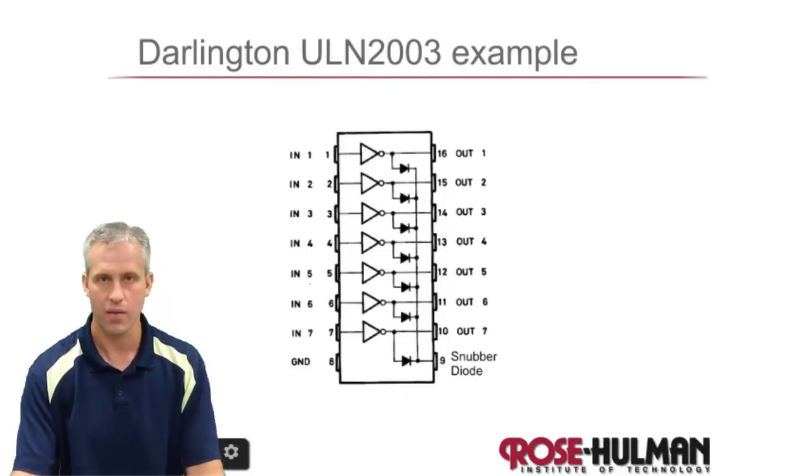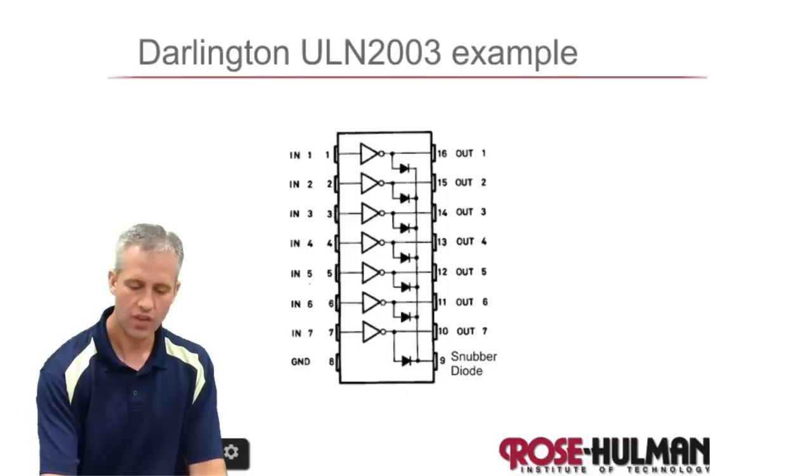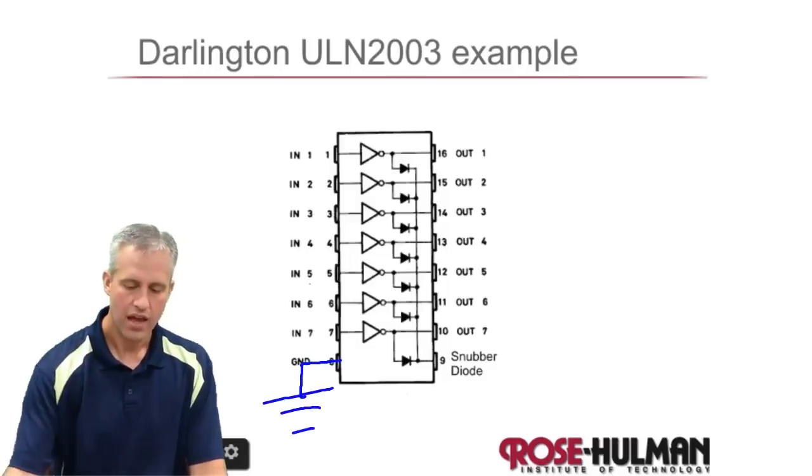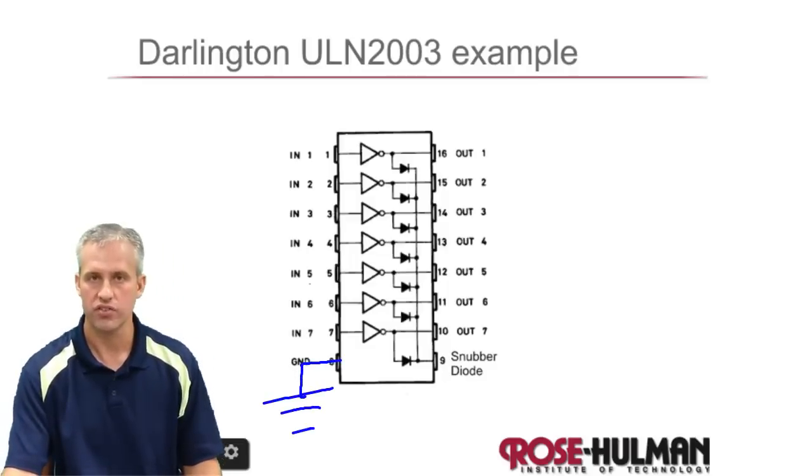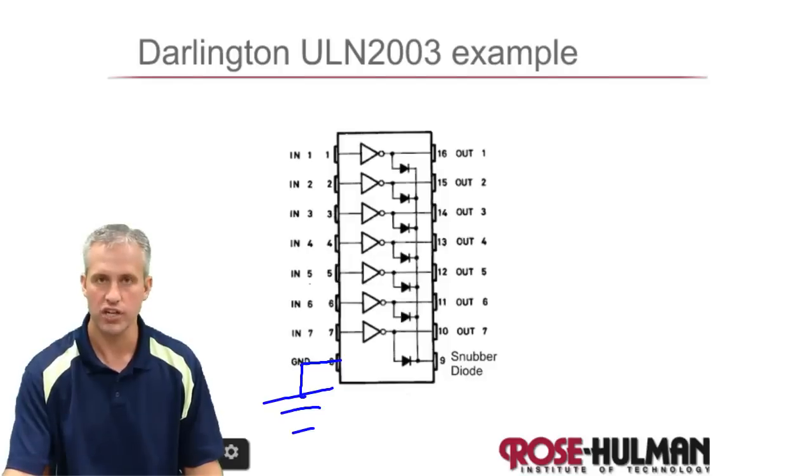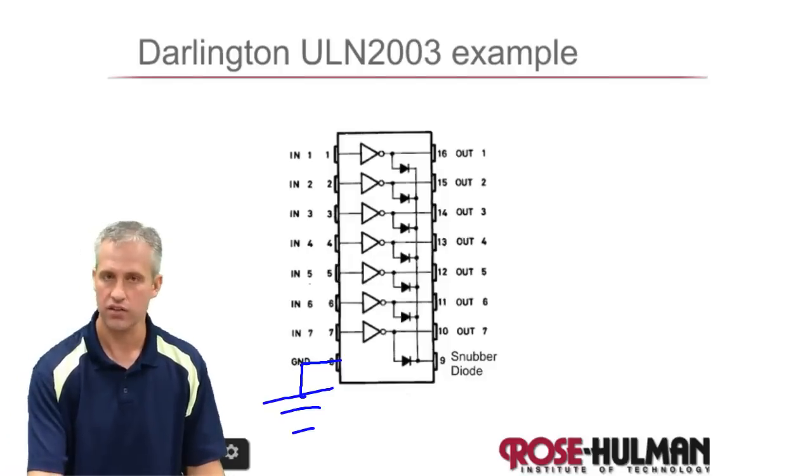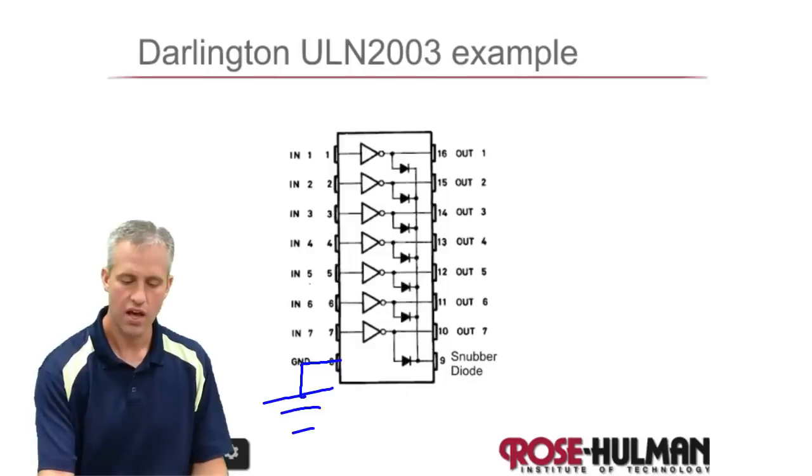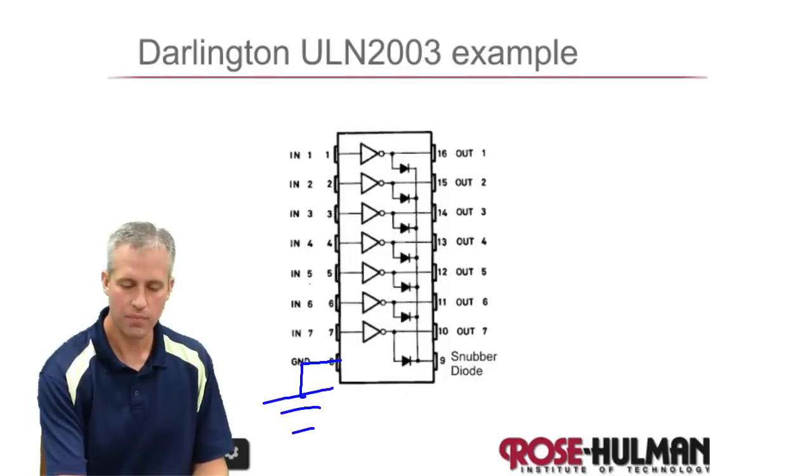They're really nice, so the way they work and look is they come in a package like this. They share an emitter, so the emitter is the same on all of these BJTs, and it's pin eight, and you just ground it, which is nice. And then you've got seven independent bases.